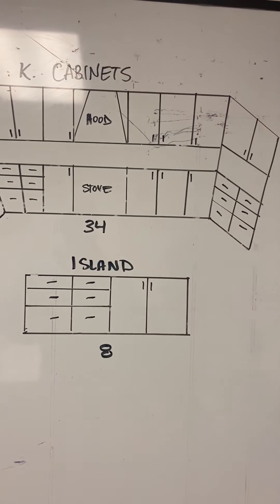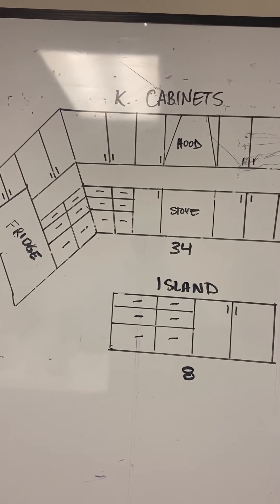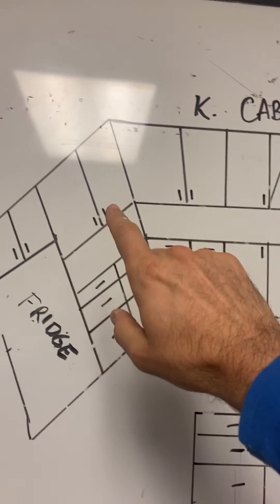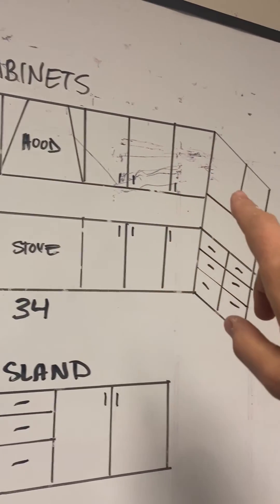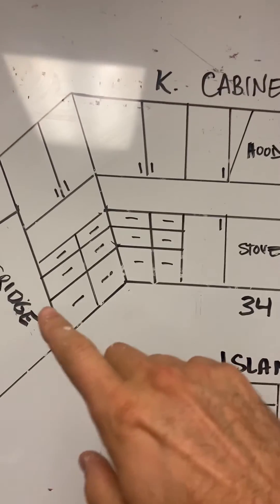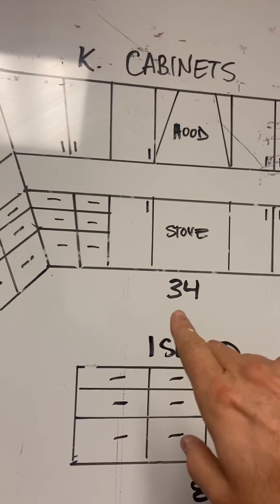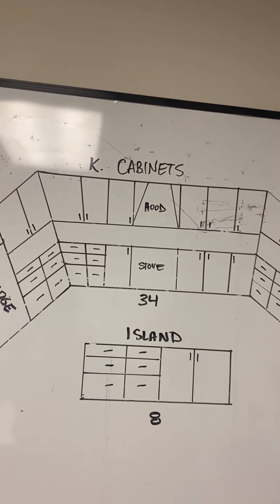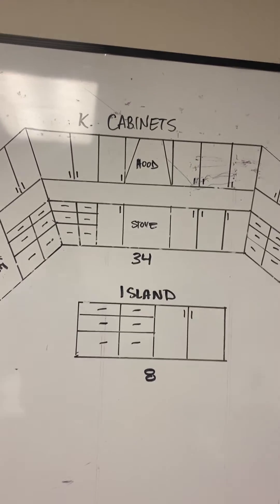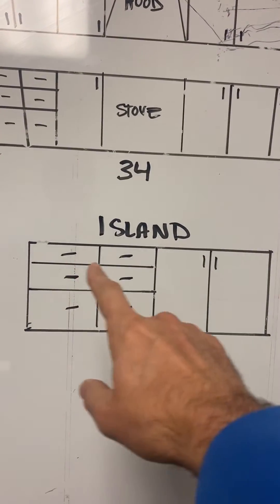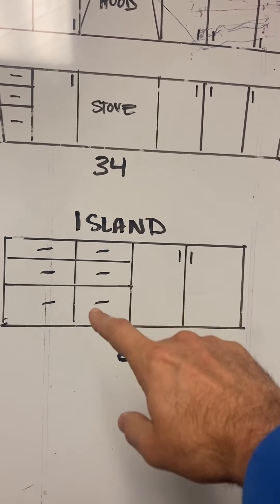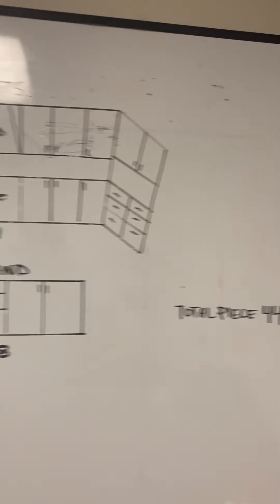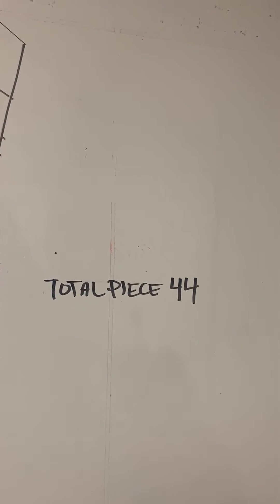I like to go through and count up how many pieces we have. By 'piece' I mean door and drawer. Counting across the top: one, two, three, four, five, six, seven, eight, nine, ten, eleven, twelve — then across the bottom — we end up with 34 pieces on the main area. The island has one, two, three, four, five, six, seven, eight pieces. So total pieces: 34 plus 8 equals 44 pieces.